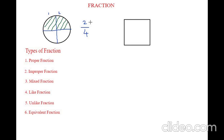So the total number of parts will be written down and the number of shaded parts will be written up. Whatever number is written above is called the numerator, and the number written down is called the denominator. Isn't it easy? The number of parts written down is the denominator and the number of shaded parts written up is the numerator.